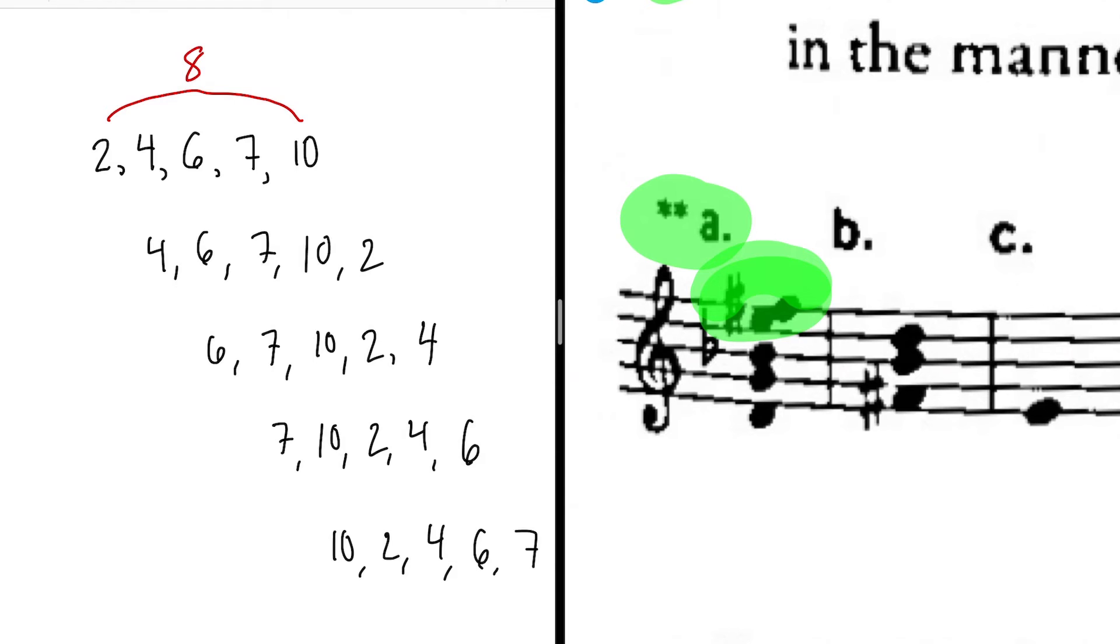You don't actually have to write all these numbers out. I just want to be super clear about what I'm doing because all you have to do is compare those outer numbers. 2 to 4, that's 10. 6 to 4, also 10. 7 to 6, 11. 10 to 7, 9. So this is the normal form. 2, 4, 6, 7, 10.